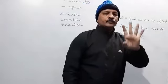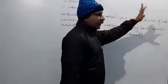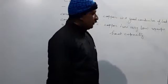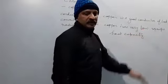So copper is used for making calorimeter because of two important reasons. The first one is it is a good conductor of heat and second one is it has very low specific heat capacity.